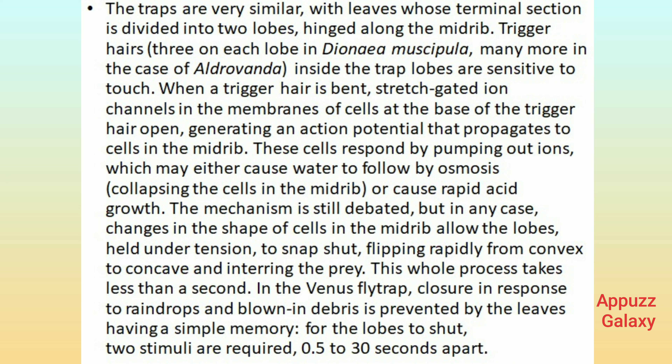In the Venus flytrap, closure in response to raindrops and blown-in debris is prevented by the leaves having a simple memory for the lobes to shut. Two stimuli are required, 0.5 to 30 seconds apart.